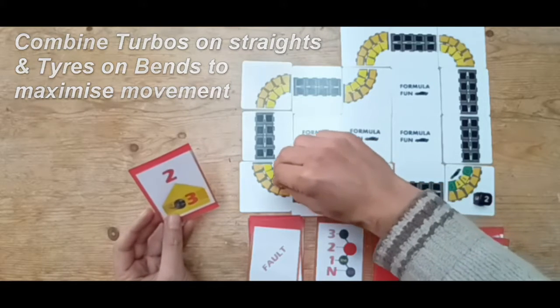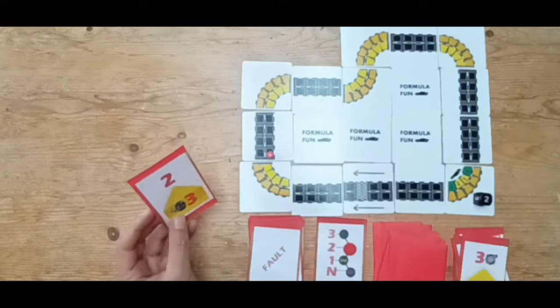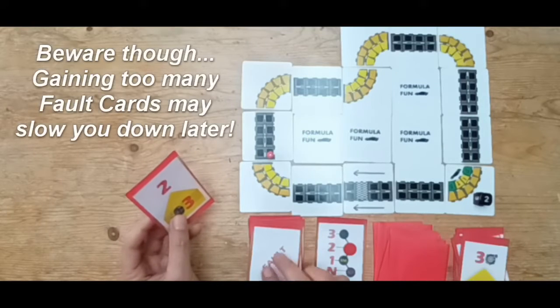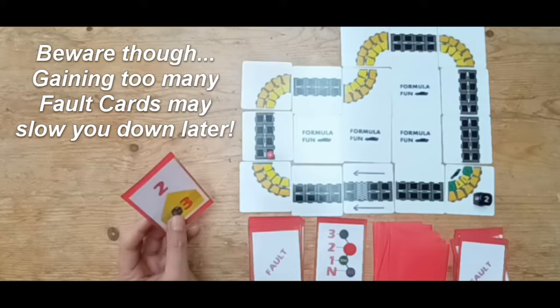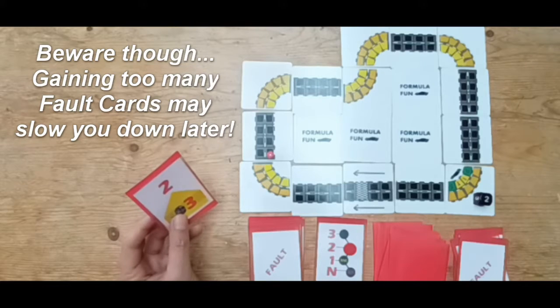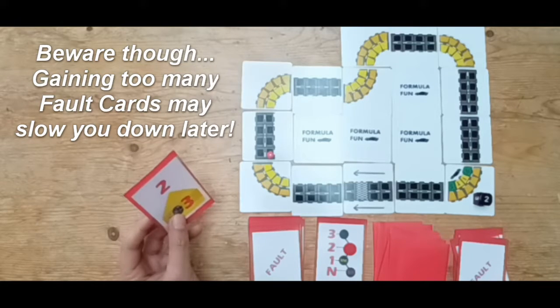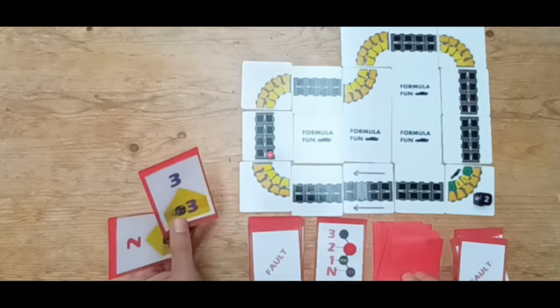So for my deck, translate that onto the track: one, two, three, four, five, six. And then I gain another adjustment, so I gain a fault card because I'm maxed out on my second gear. And that's basically how each turn works.